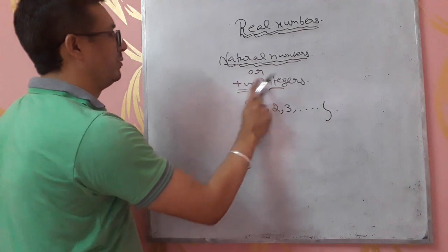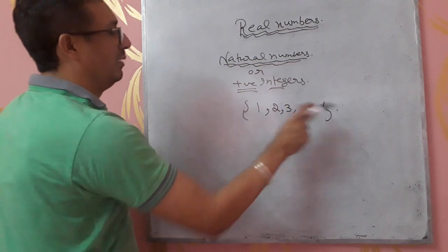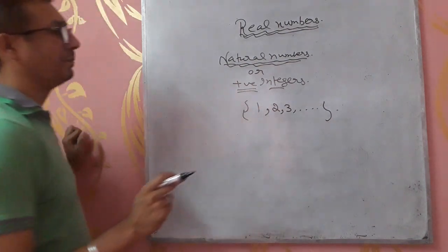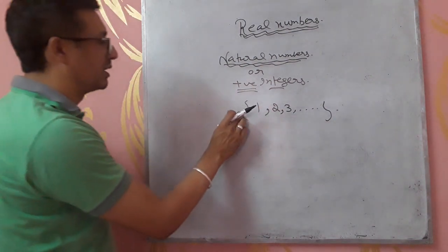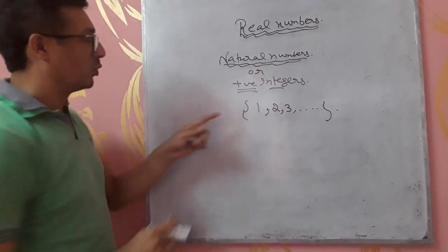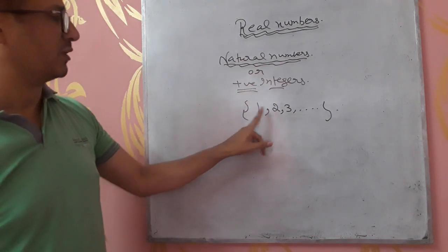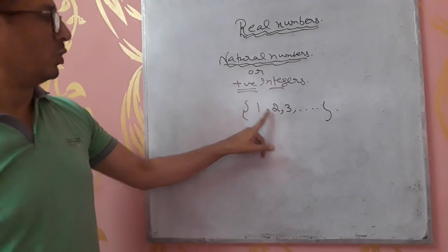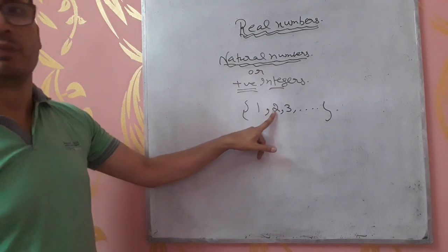Another name for natural numbers is positive integers. We write them in curly brackets. The curly bracket has a special meaning — it means that between two consecutive natural numbers in the set, there is no other natural number listed.